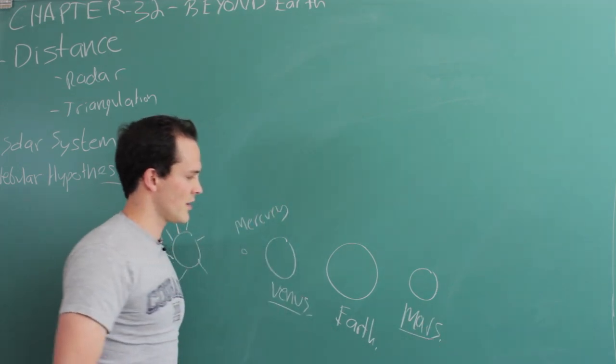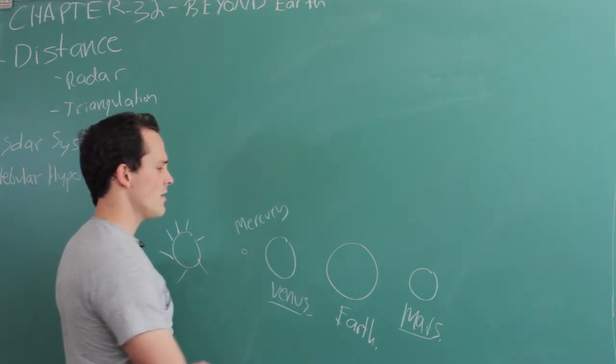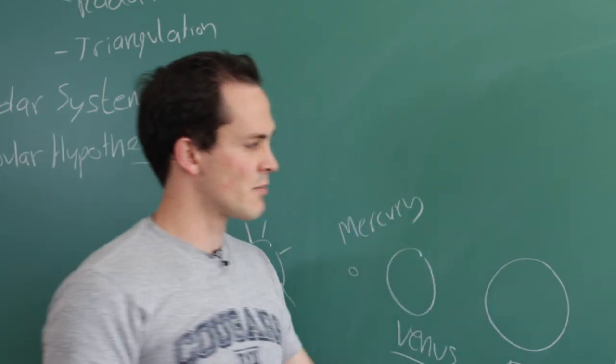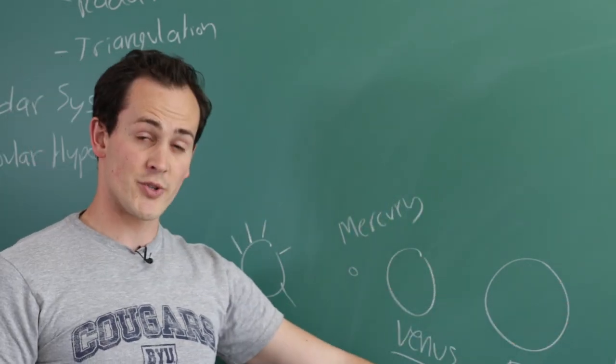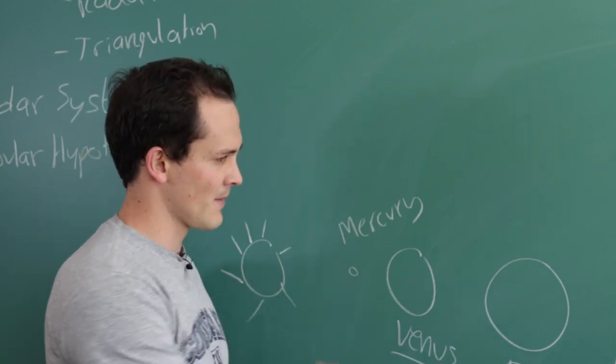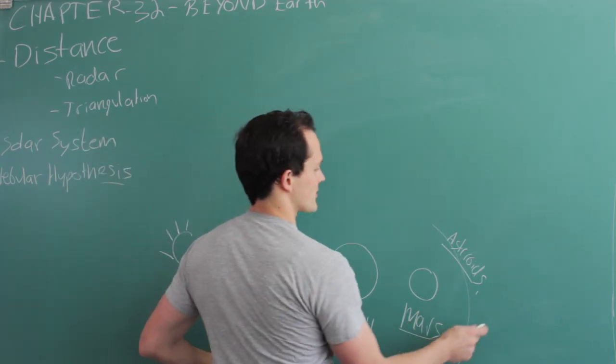Mars is the red planet, named after the god of war. Farther out from Mars you have a belt of what are called asteroids. These asteroids mark the boundary between what are called the terrestrial planets, which means they have rocky cores, and what are called the Jovian planets.